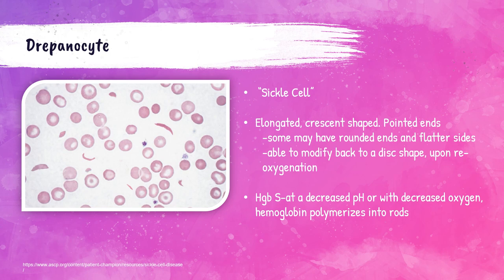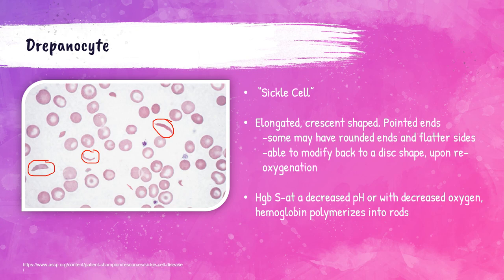Drepanocytes, or sickle cells, are thin, elongated, crescent-shaped red blood cells with pointed ends. These cells contain hemoglobin S, which is an abnormal hemoglobin type, and are seen in sickle cell disease and sickle cell trait. These red blood cells polymerize into this shape when there is a decrease in blood pH or a decrease in oxygen. They're frequently seen with codocytes, which are also called target cells. This is a great example of a drepanocyte or sickle cell, and here's another one. I also mentioned codocytes — this is an example of one, and it literally looks like a bullseye right in the center.